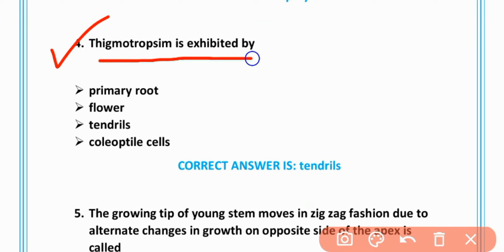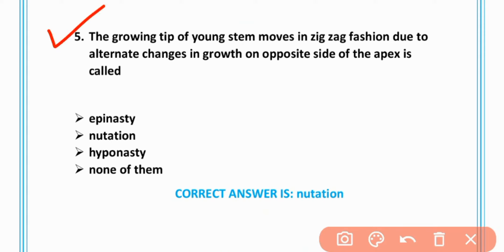MCQ number 4: Thigmotropism is exhibited by tendrils, option C is correct. MCQ number 5: The growing tip of young stem moves in zigzag fashion due to alternate change in growth on opposite side of apex is called...